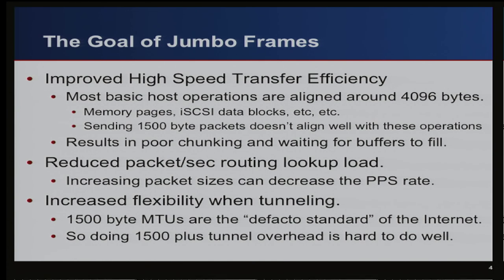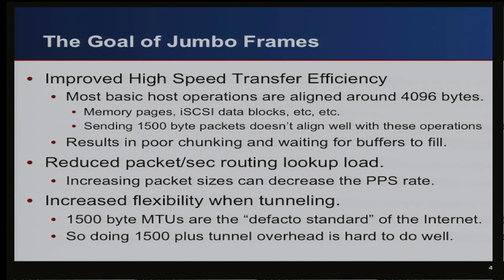The second goal of jumbo frames is to reduce the packet-per-second count. Going from 1500 bytes to 9000 is a 6x increase in size, so you might be looking at one-sixth the number of packets per second. Fifteen years ago, packets per second was a big concern — a major cause of load on devices was keeping up with all those lookups.